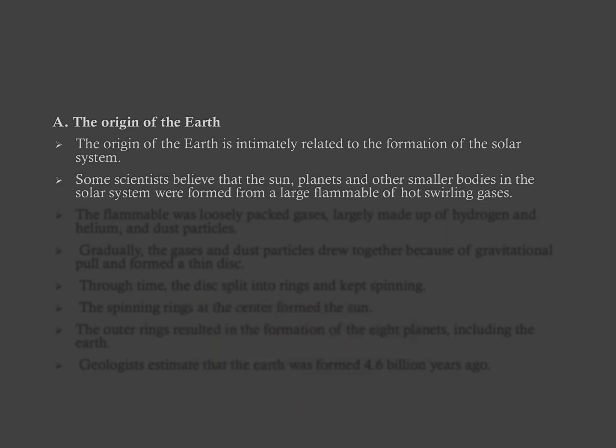Based on this hypothesis or based on this theory, some scientists believe that the sun, the planets and other smaller bodies in the solar system were formed from a large flammable of hot swirling gases.